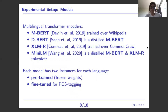Additionally, we leveraged the distilled version of multilingual BERT, and the less-known model MiniLM, distilled again from multilingual BERT, but using the XLM-RoBERTa tokenizer. Each model has two instances for each language: a pre-trained model with frozen weights, and a fine-tuned model for a part-of-speech tagging task for the target language.